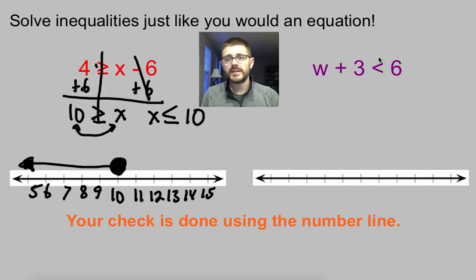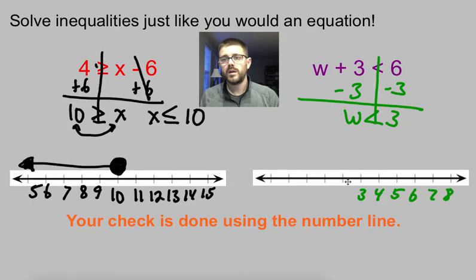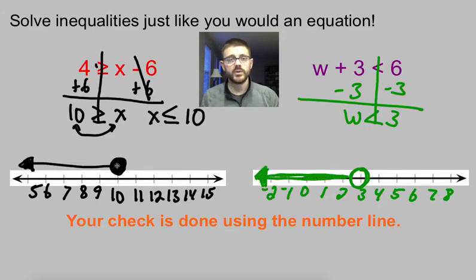Next: w plus 3 is less than 6. Focus on your variable — they added 3, so I'm going to do the opposite and subtract 3. W is less than 3. So 3 goes in the middle of my number line. The inequality symbol just slid down. W is less than 3, so I'm going to do an open circle at 3, and I want numbers that are less than 3, so that's going to be my left-hand side. You can shade right on the line or above it — either is fine, as long as I can tell which way you went.